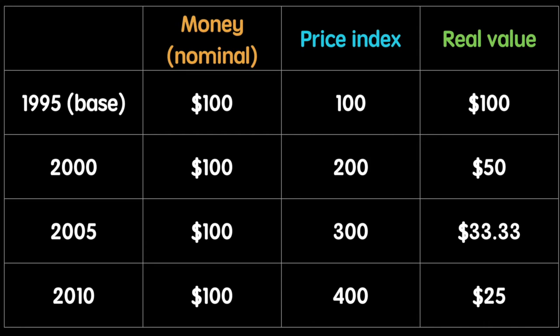We follow this trend to 2005 and 2010. In 2005, the price level has tripled from 1995, so the worker's wage of $100 now only buys $33.33 worth of goods relative to 1995 prices. Finally, 2010 prices have quadrupled from 1995, so the real value of $100 wages in 2010 is equal to $25 relative to 1995 prices.